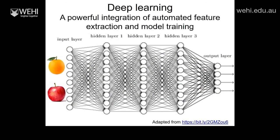Everybody has probably heard the buzzword 'deep learning.' It's actually not new — it's a technique developed in the 1980s — but only in the last 15 years has it become very powerful, thanks to advances in computation. It has basically revolutionized many fields, most notably computer vision and natural language processing in computer science, and now it is completely dominating the world of machine learning.